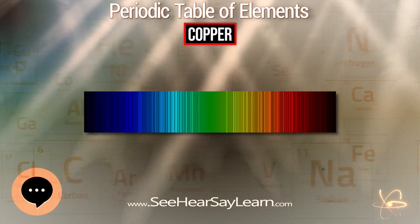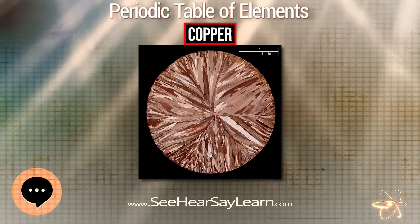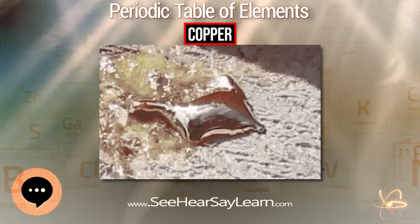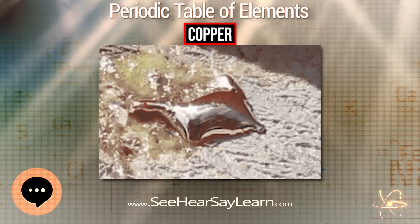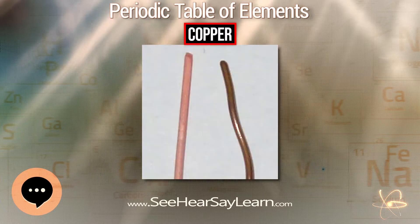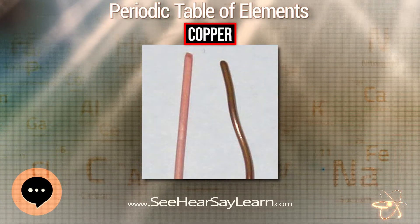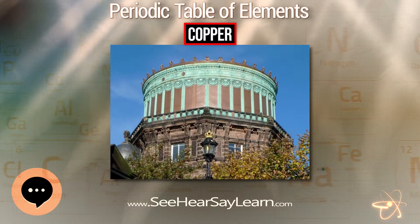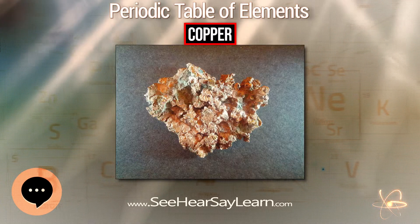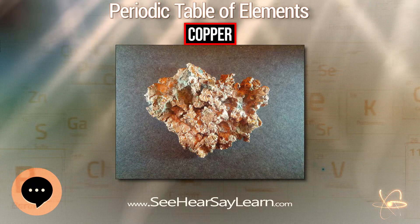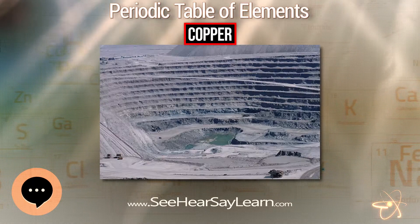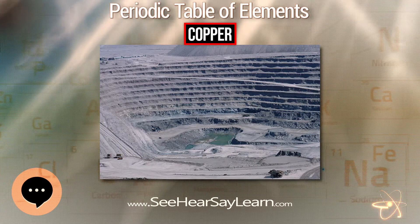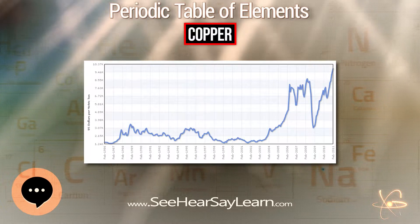Chromobacterium violaceum and Pseudomonas fluorescens can both mobilize solid copper as a cyanide compound. The ericoid mycorrhizal fungi associated with Calluna, Erica, and Vaccinium can grow in metalliferous soils containing copper. The ectomycorrhizal fungus Suillus luteus protects young pine trees from copper toxicity. A sample of Aspergillus niger was found growing from gold mining solution and was found to contain cyano-complexes of metals such as gold, silver, copper, iron, and zinc.